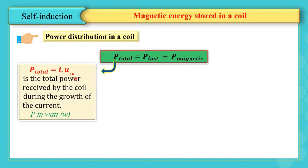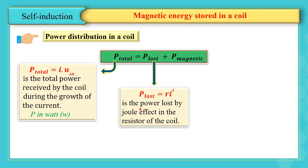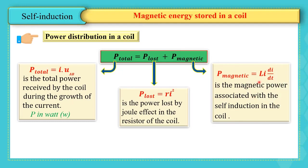P_total = i × U_AB is the total power received by the coil during the growth of the current, with unit watts. P_lost = Ri² is the power lost by Joule effect in the resistor of the coil. P_magnetic = Li(di/dt) is the magnetic power associated with self-induction in the coil.